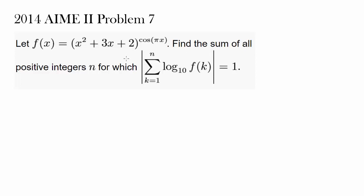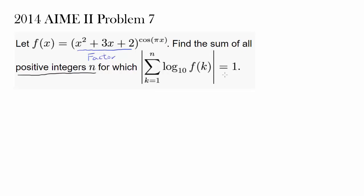Let's try out this question from 2014, AMC 2, problem 7. Let f of x be x squared plus 3x plus 2, raised to cosine of pi x. The first thing you may notice is that we can factor x squared plus 3x plus 2 — it's x plus 1 times x plus 2. Find the sum of all positive integers n for which the absolute value of the summation from k equals 1 to n of log base 10 of f of k is equal to 1.